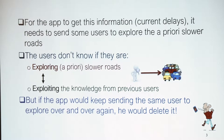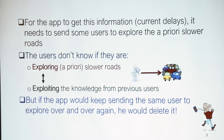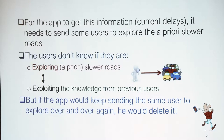Road B had a huge traffic jam that would have taken three hours to drive. But for the app to get this information regarding current delays, it needs to sometimes sacrifice users and send them to explore the a priori slower roads. Fortunately, the users don't know if they're getting recommendations to explore the slower road or to exploit knowledge from previous users.